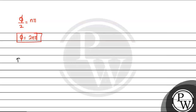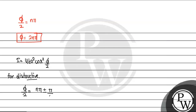For destructive interference, the intensity should be minimum. Since I = 4kA² cos²(φ/2), this is zero when φ/2 equals (nπ ± π/2), which means φ should be equal to (2nπ ± π). This is the condition for destructive interference. So this is the answer for this question.